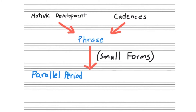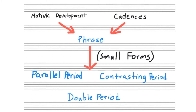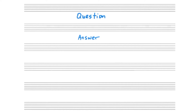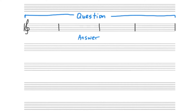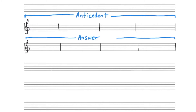The parallel period form, the contrasting period form, and the double period form. All period forms have a question and answer type of structure, where the first phrase consists of a question, and the second phrase consists of the answer to that question. The question phrase is known as the antecedent phrase, and the answer phrase is known as the consequent phrase.